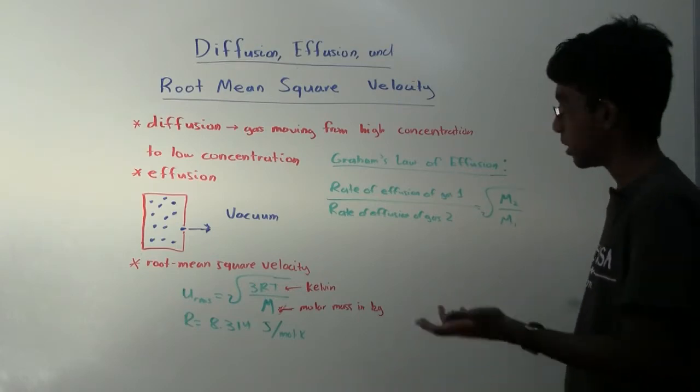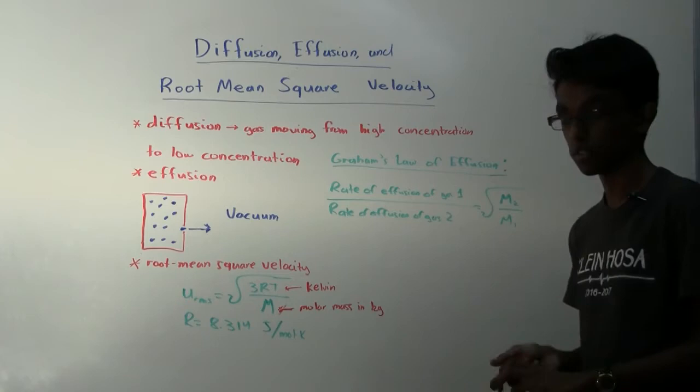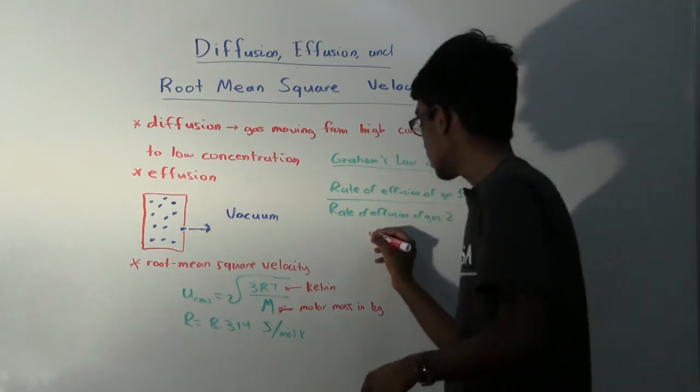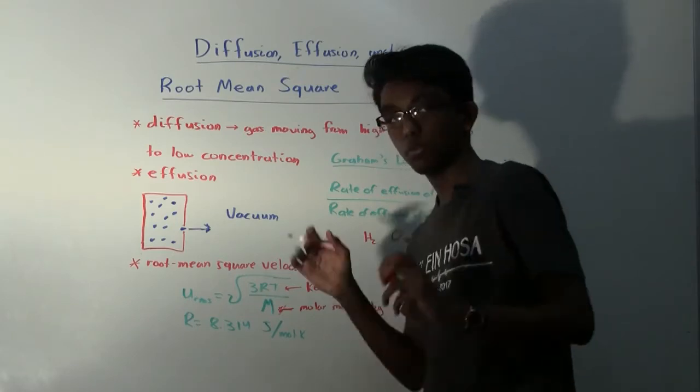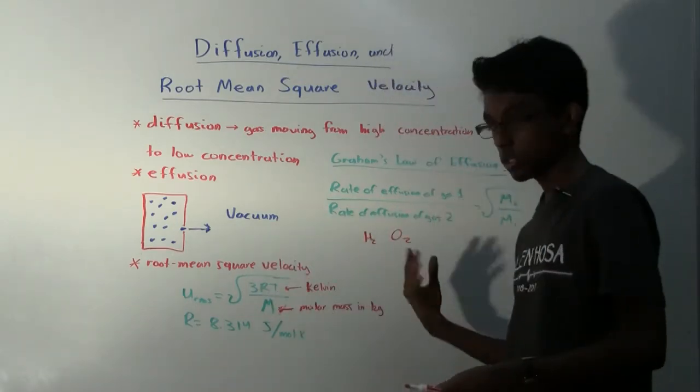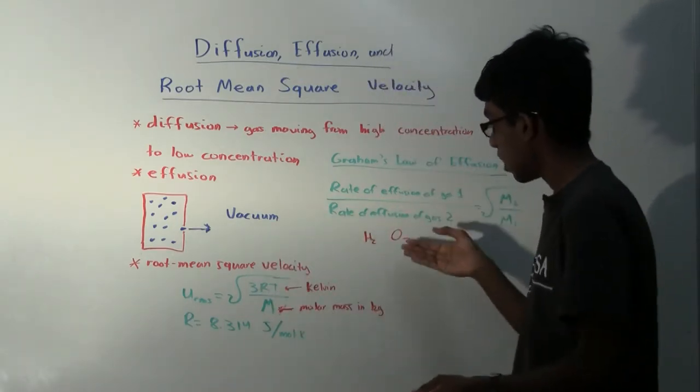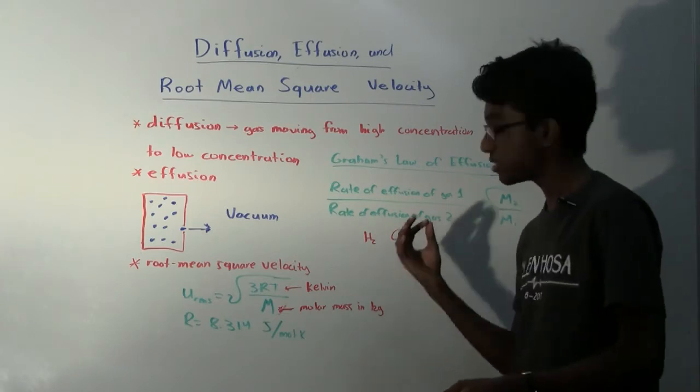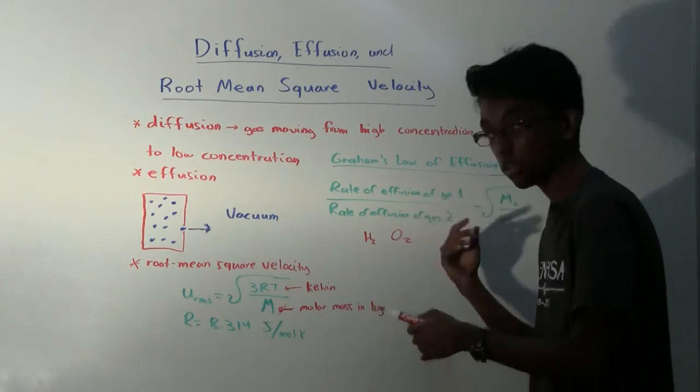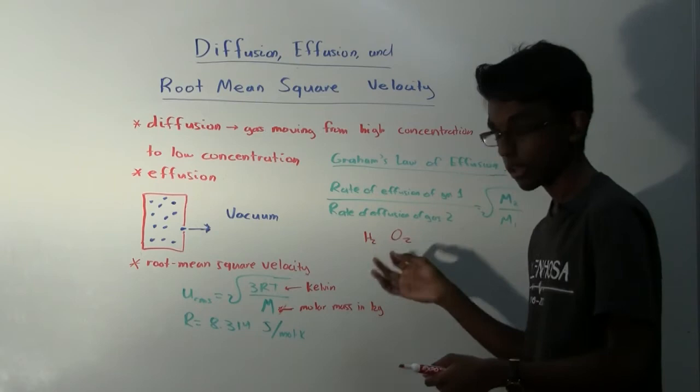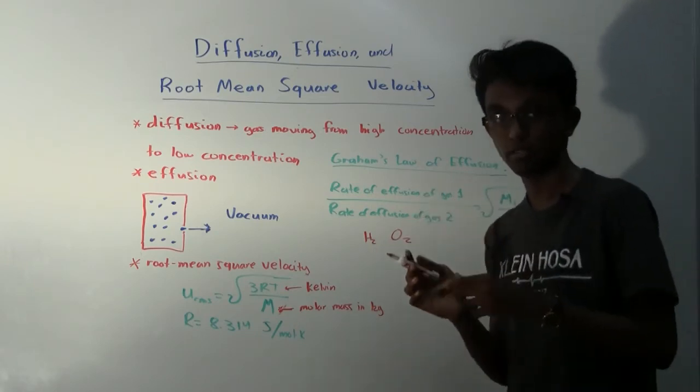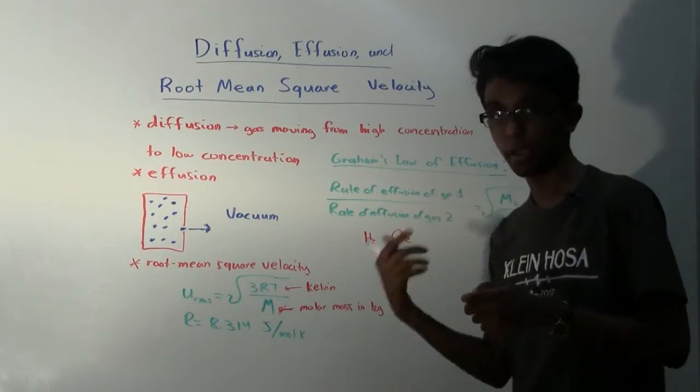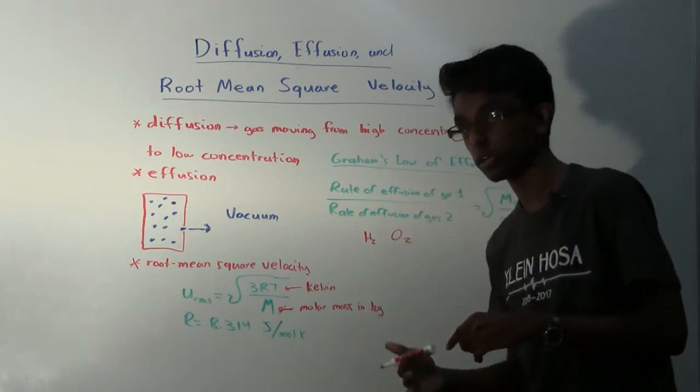Let me show you a problem where we'd have to use Graham's law of effusion. So let's say we have hydrogen and oxygen. Now before we even start, we should be able to conjecture that oxygen is going to effuse a lot slower than hydrogen, because oxygen is a way more massive particle. It's bigger and it has a bigger mass, so it should effuse slower.